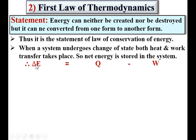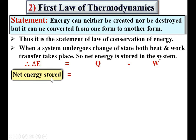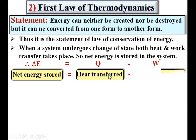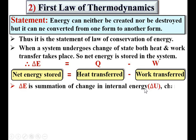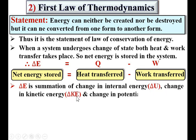The net energy stored in the system is equal to heat supplied minus work done. Whatever the difference of heat supplied and work done, that will be stored in the system — that is called stored energy and is represented by delta E. So delta E, the net energy stored, equals Q (heat transferred to the system) minus W (work transfer). The stored energy is the summation of the change in internal energy delta U, change in kinetic energy delta KE, and change in potential energy delta PE.